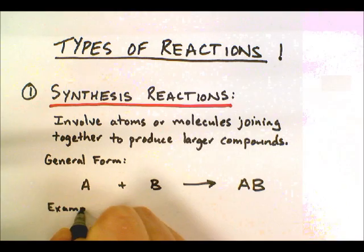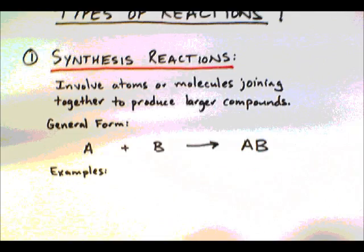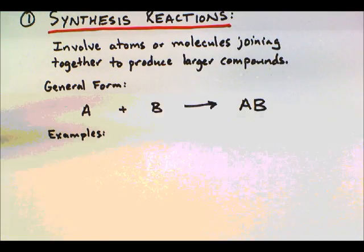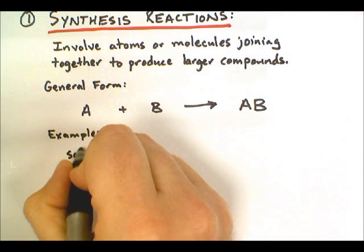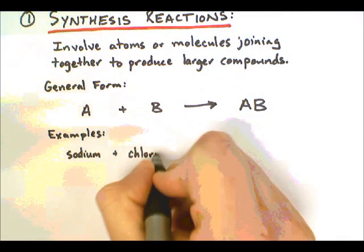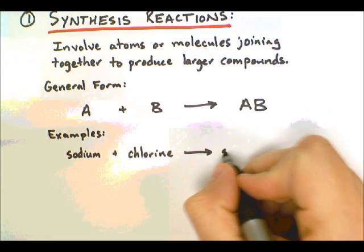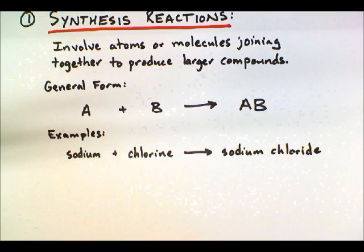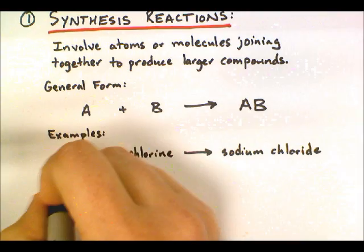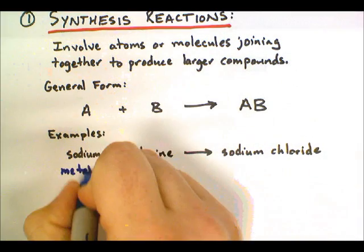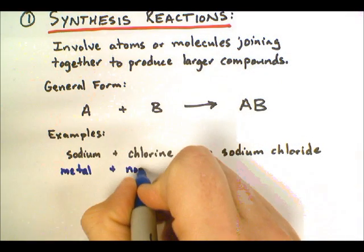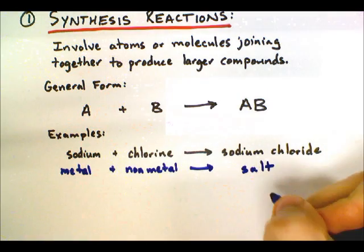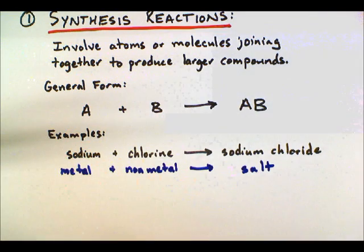Back to our examples. Looking at the general form A plus B produces AB, there are many different examples. First, sodium and chlorine react to produce sodium chloride. Essentially, a metal and a non-metal can react to produce an ionic compound, also known as a salt.